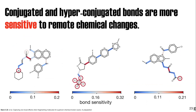After looking at all these molecules, we found that certain bonds are more sensitive than others—specifically, conjugated bonds that are part of conjugated systems are more sensitive to remote substituents. I'm showing three representative molecules where the more red the bond, the more sensitive it is. I'm also showing which functional group or chemical moiety each bond is sensitive to.